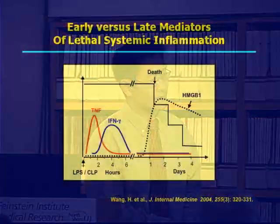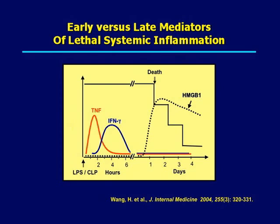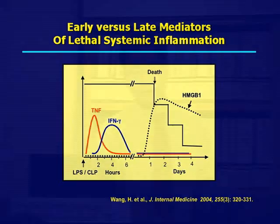In animal models of sepsis, such as endotoxemia — which involves injection of low-dose bacterial toxin — or cecal ligation and puncture, early cytokines accumulate very early, within hours. However, HMGB1 is not detected in the circulation at early time points, but only at late time points. The kinetics of HMGB1 accumulation in sepsis actually parallelize with the onset of animal lethality.